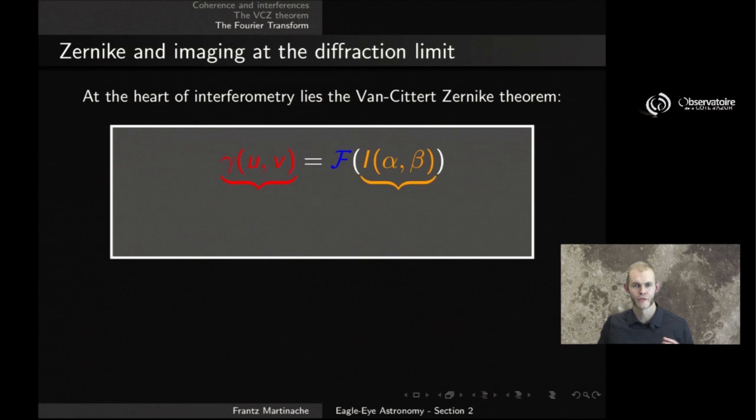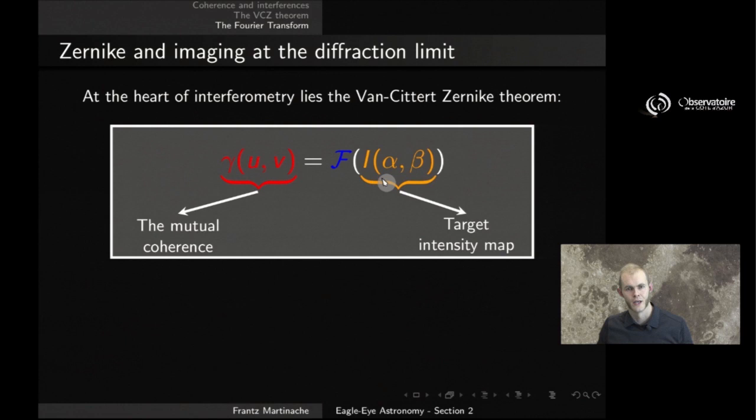In the previous sections, we've acquainted ourselves with the Van Cittert-Zernike theorem, which is really the fundamental brick at the heart of interferometry that we use to relate the observables of interferometry to the objects we are observing with that technique. Let's simplify our notations here and simply write that the mutual coherence function γ, which is a function of the UV coordinates, relates to the intensity map that describes the target, which is a function of pointing coordinates on sky, and the two quantities are related to each other via an operator called the Fourier transform.